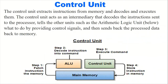The control unit extracts instructions from memory, then decodes and executes them. It performs the overall operation of the microprocessor. The control unit acts as an intermediary that decodes instructions sent to the processor, tells other units such as the arithmetic logic unit what to do by providing control signals, and then sends the processed data back to memory. This diagram shows the function of the control unit.